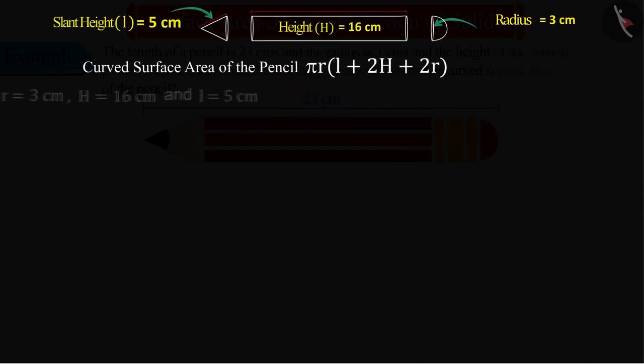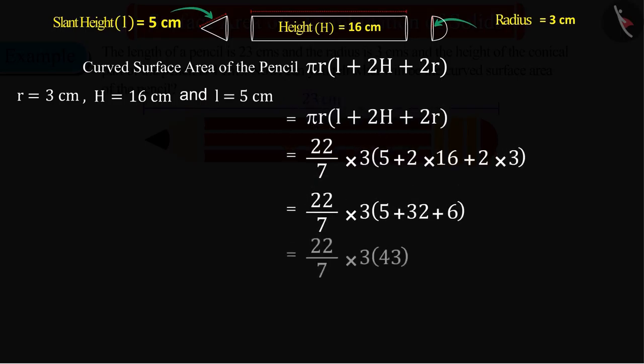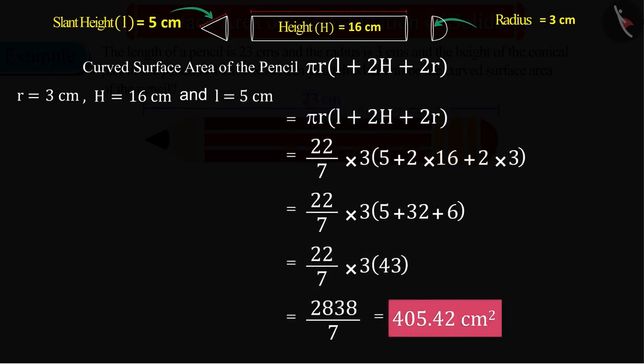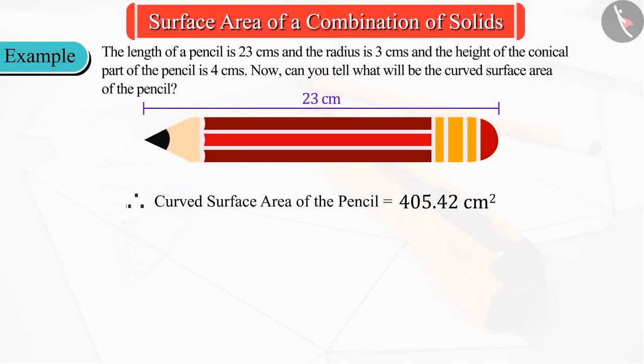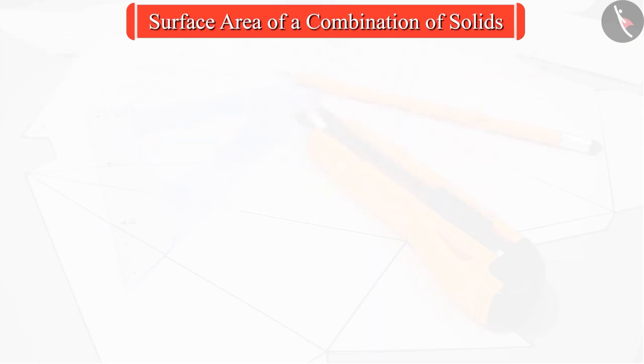By substituting the value of the radius R, the height H, and the slant height L in this formula, and upon solving, the curved surface area of the figure is obtained as 405.42 square centimeters. So we can say that the curved surface area of the pencil is 405.42 square centimeters.